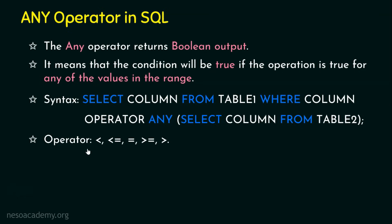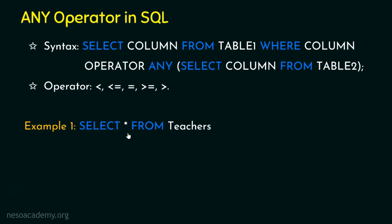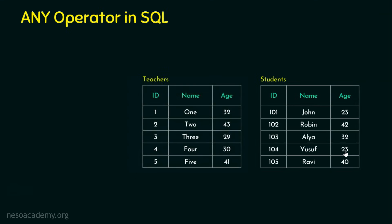Let's see Example 1. The query is: SELECT * FROM teachers WHERE age = ANY (SELECT age FROM students). We use SELECT * to get all columns. In order to execute this example, we need two tables — teachers as the outer table and students as the inner table.